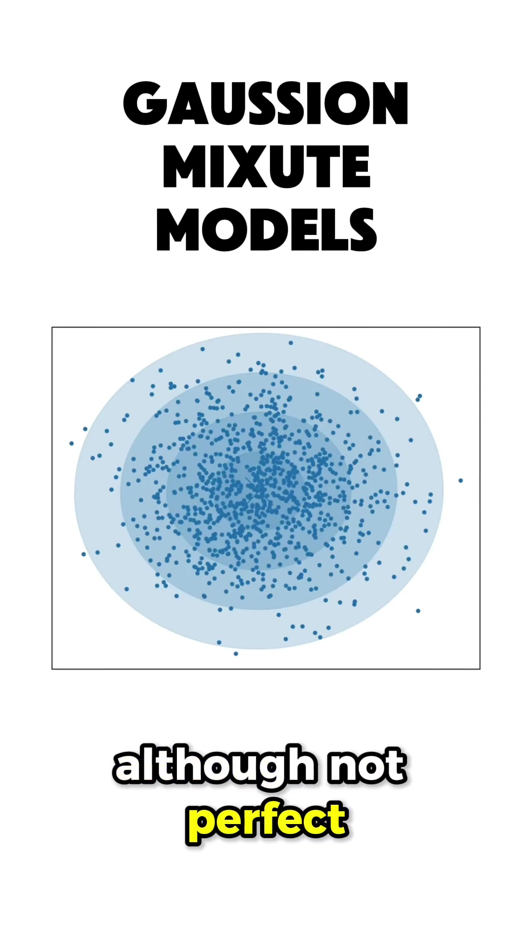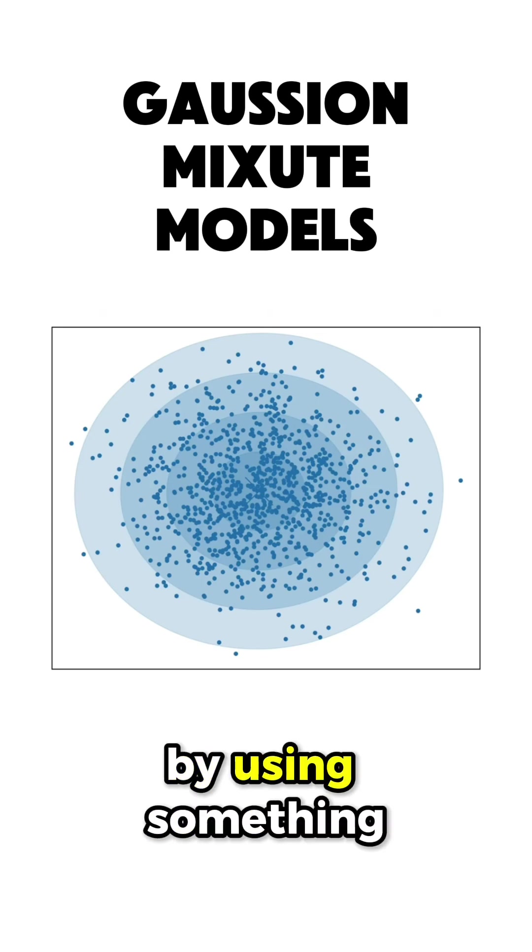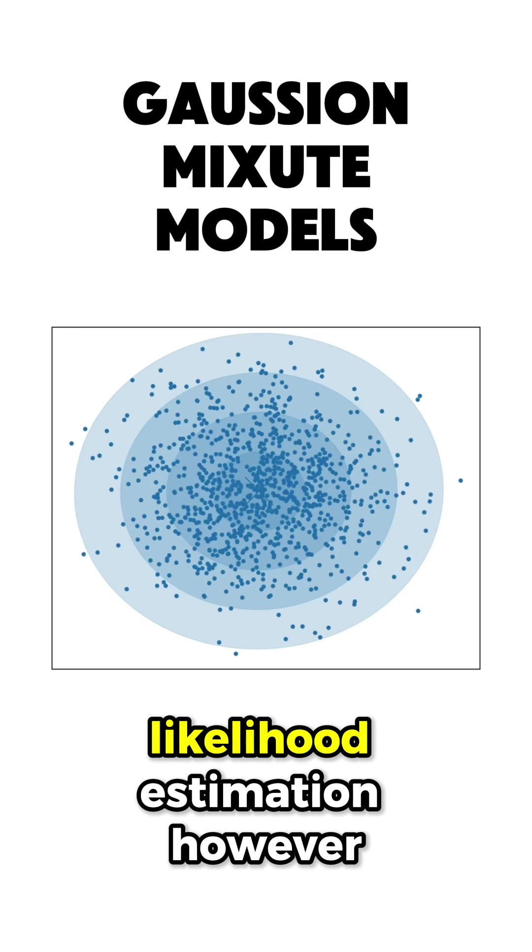Although not perfect, a good initial guess would be to say that this data comes from a Gaussian distribution and try to fit such a model on top of it by using something like the maximum likelihood estimation.